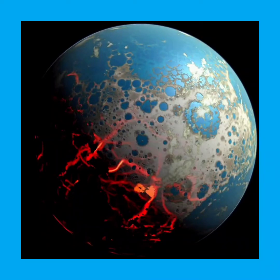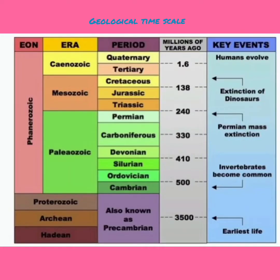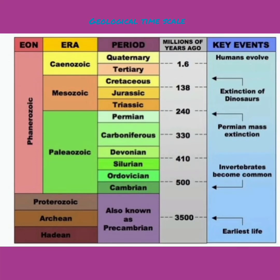Do you know, the geological time scale is a record of Earth's history based on the rocks and the organisms that lived at different times. It is like a calendar for events in Earth's history. It subdivides all time into named units of abstract time called Eons, Eras, Periods, Epochs, and Ages.